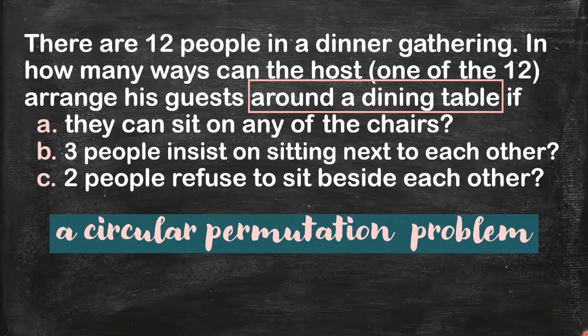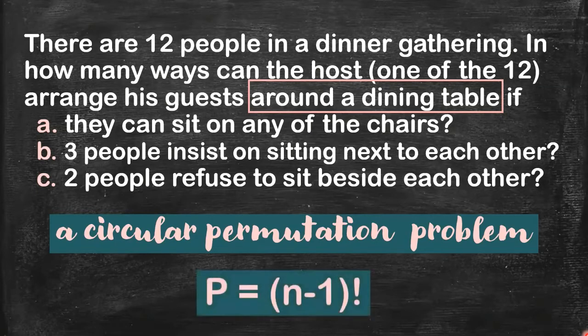It's nice to recall the circular permutation formula, which is very easy. So P is equal to (N − 1) factorial. This gives us the number of arrangements if we are going to arrange N objects in a circular manner.